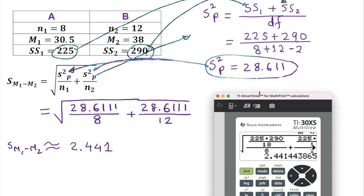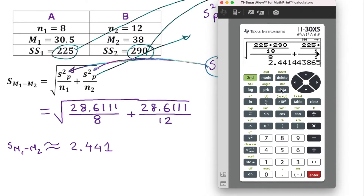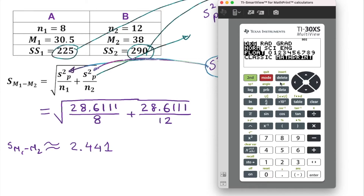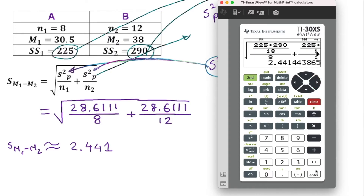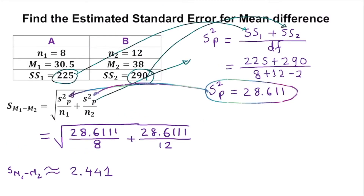Both methods give the same answer of 2.441. Rounding depends on the direction of the question — two decimal places gives 2.44, three gives 2.441. You can set decimal places on the calculator by going to Mode, then Float, and selecting the number of decimal places. Thank you, I hope you understood.